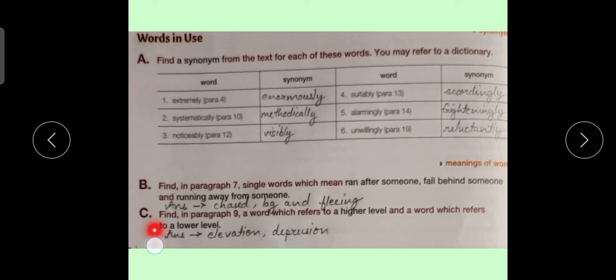Sentence number, exercise number C. Find in paragraph 9 a word which refers to a higher level and a word which refers to a lower level. Elevation is the word which refers to a higher level and depression is a word which refers to a lower level.